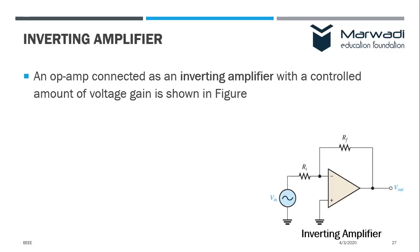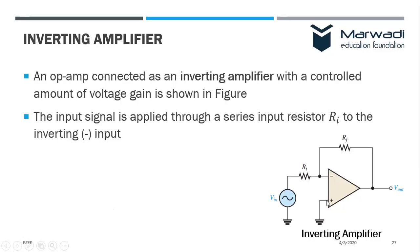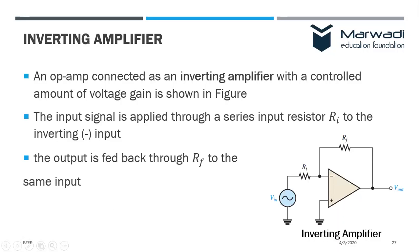The input voltage is connected through the resistance to the inverting terminal, which is the negative terminal. The non-inverting terminal is connected to the ground. The output is fed back through the resistance RF back to the same input.